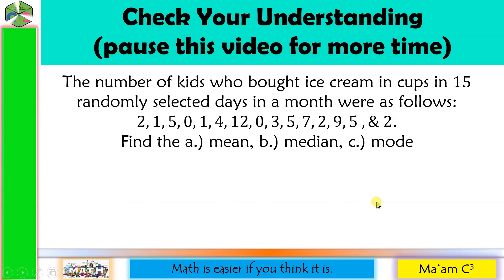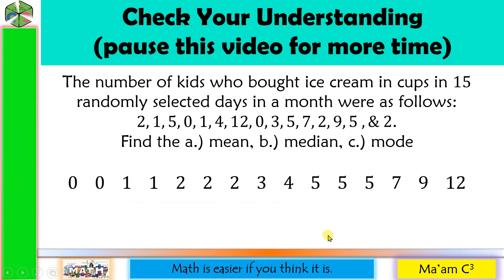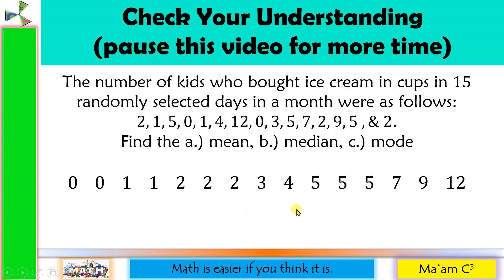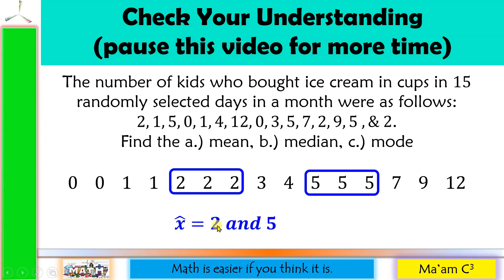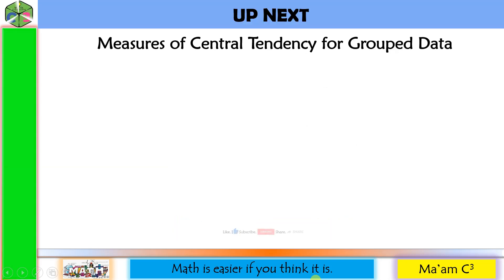For the mode: using the already-arranged data — 0 appears twice, 1 appears twice, 2 appears three times, 3 once, 4 once, 5 appears three times, 7 once, 9 once, 12 once. Both 2 and 5 appear three times, which is the highest frequency. So the modes are 2 and 5. Since there are 2 modes, this is bimodal. Our next lesson is measures of central tendency for grouped data.